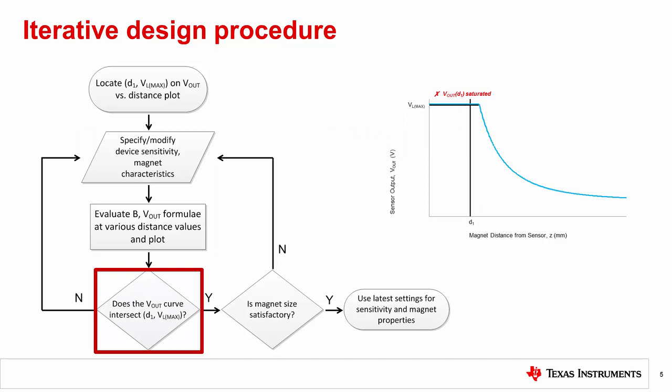If Vout at D1 is saturated, then decrease sensitivity or use a smaller magnet. Again, plot the new Vout versus distance curve.